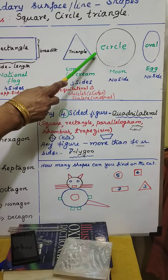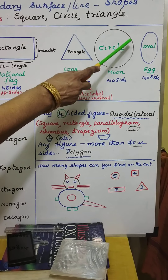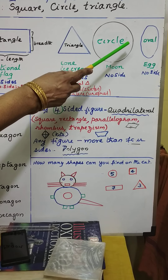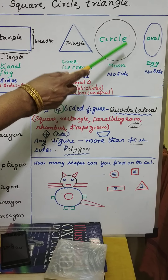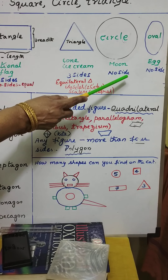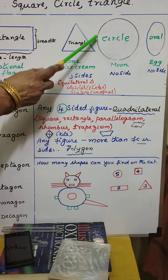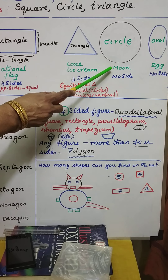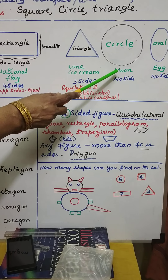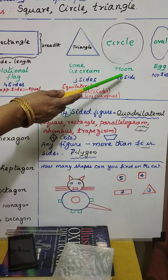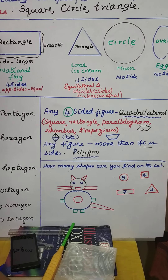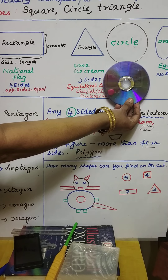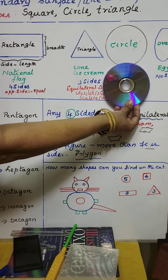Now look at this — this is what is called a circle. Does it have any side? No, there is no side. That is why it is given no side, but only the outer boundary line you can see. You can remember: circle means moon, bangle, and CDs are also a best example for circle.